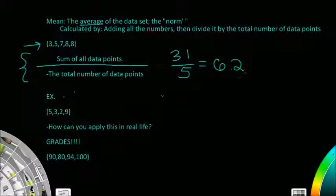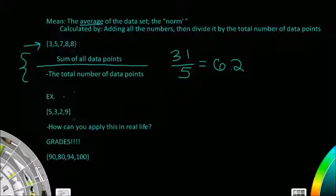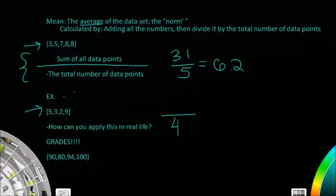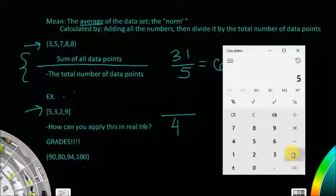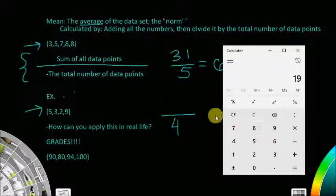Six point two is the average. Let's do one more example. I'll also try to include some links to helpful sites in the description where you can practice more — they have good explanations too if you're still confused. For the second example, we have four numbers total. Five plus three plus two plus nine equals nineteen, divided by four equals four point seven five.